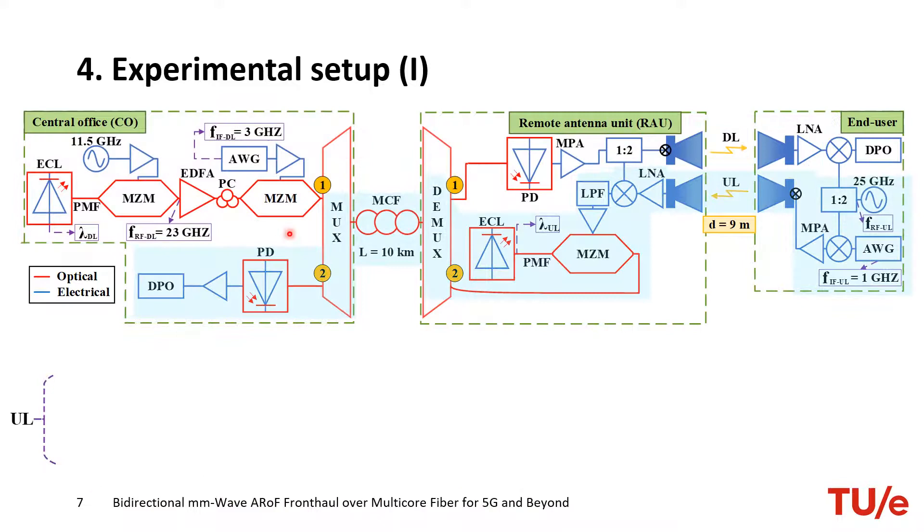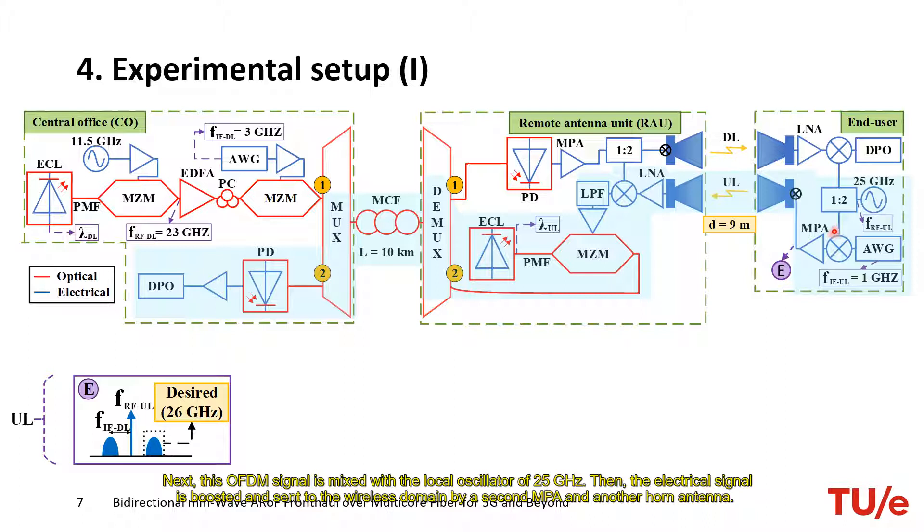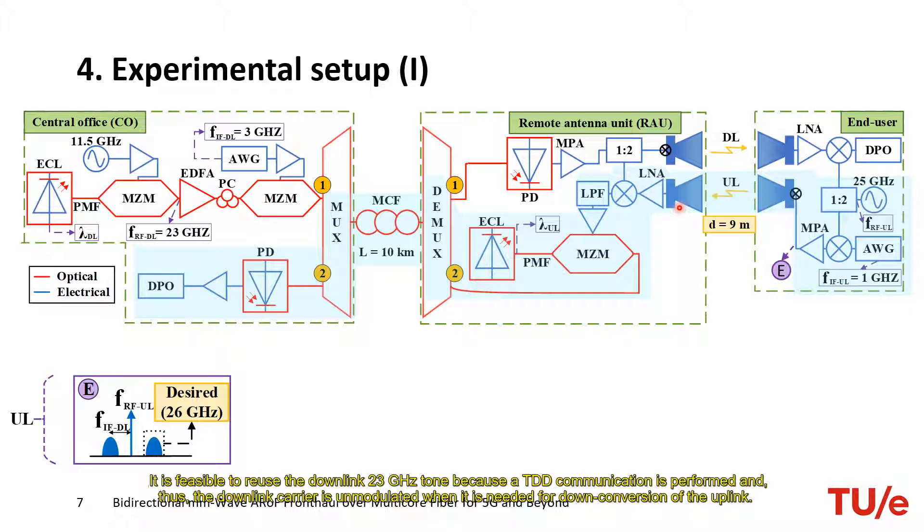For the uplink direction, the involved components are contained in this cyan box. First, the end user generates an OFDM signal at 1 GHz of intermediate frequency in a second AWG. Next, this OFDM signal is mixed with the local oscillator of 25 GHz. Then, the electrical signal is boosted and sent to the wireless domain by a second MPA and another horn antenna. In the remote antenna unit, the captured signal in the receiver antenna is amplified by a second LNA and mixed with the 23 GHz tones of the downlink. It is feasible to reuse the downlink 23 GHz tone because TDD communication is performed and thus the downlink carrier is unmodulated when it is needed for the downconversion of the uplink.